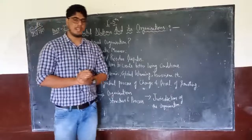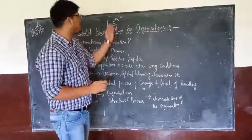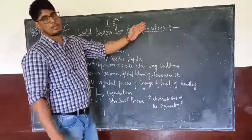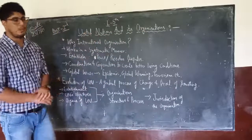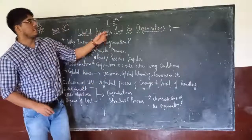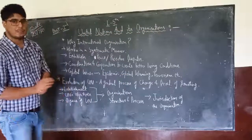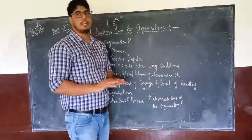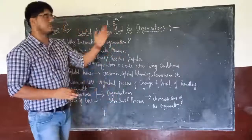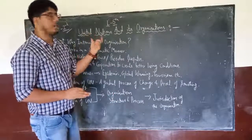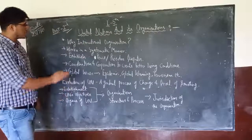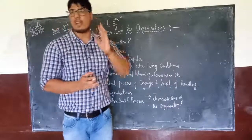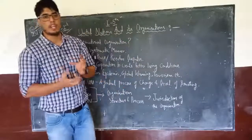Good morning to all the students of class 12th political science. We were doing the 5th chapter of your book in World Politics, and the name of the chapter is 'United Nations and its Organization.' We had already started this chapter in the last video, and today we will be taking the 2nd part. Let's see what we have covered so far as the introduction to United Nations — most commonly called the UN. The first question we took up is: why international organizations? We saw various reasons why, at the international platform, we require a body called United Nations.